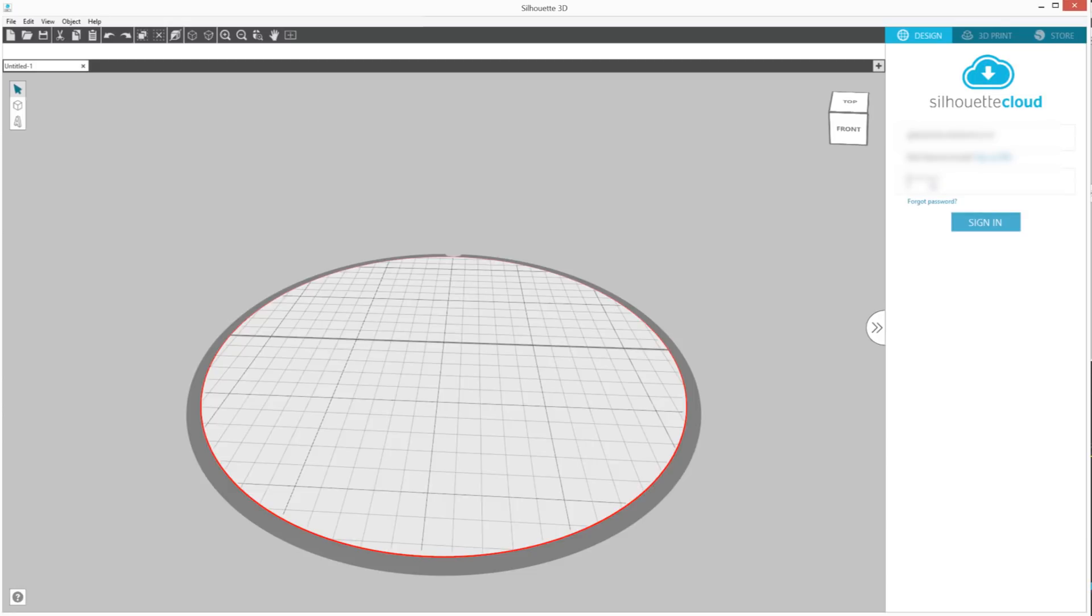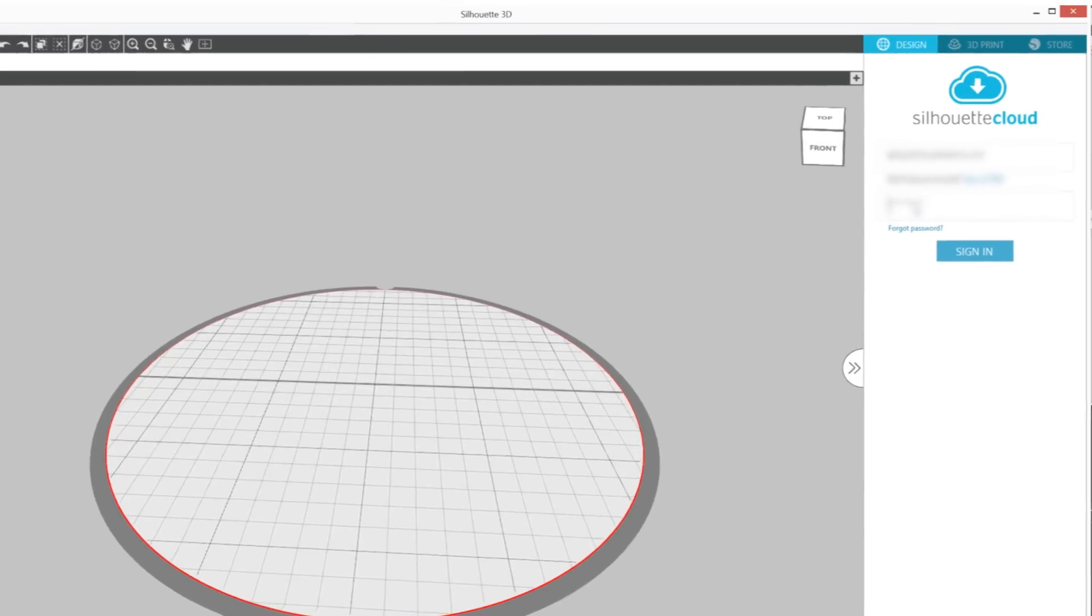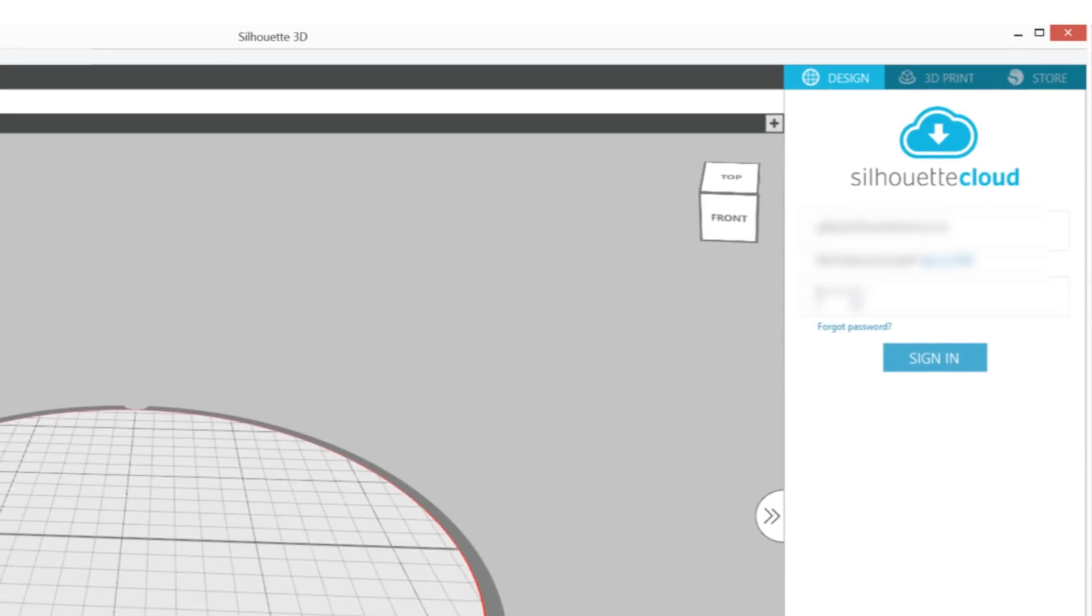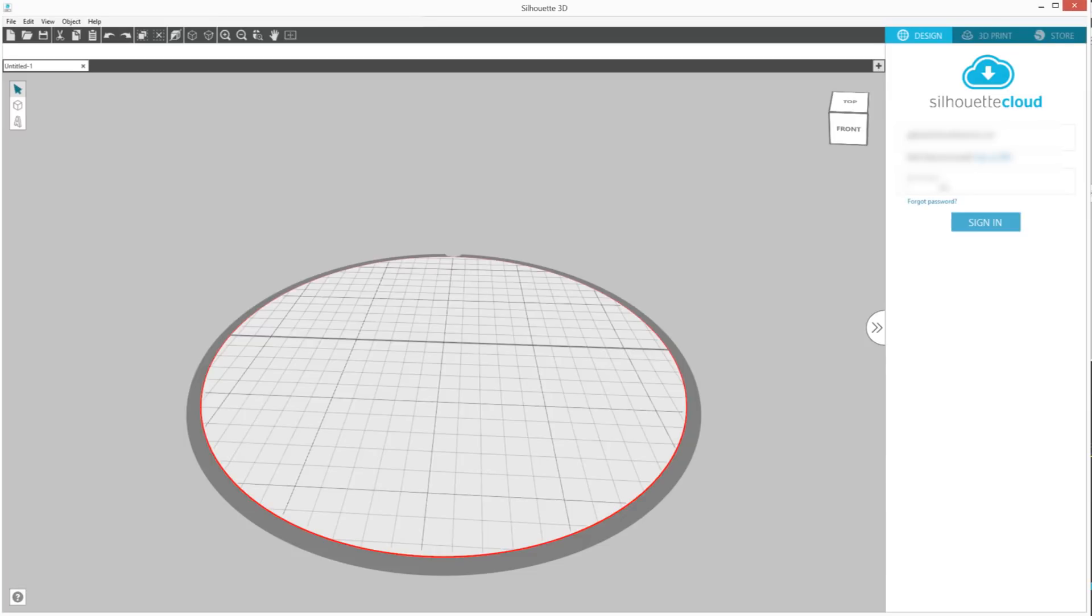On the right-hand side of the screen, you'll see a window prompting you to sign in to your Silhouette account so that you can have access to all your designs in the Silhouette Library, not just the 3D designs. Make sure you're connected to the internet and log in to your Silhouette account.